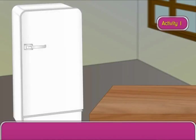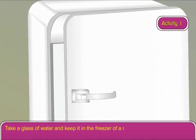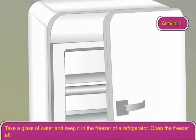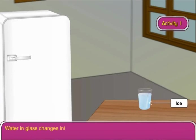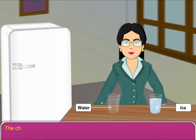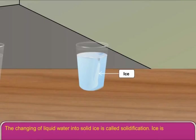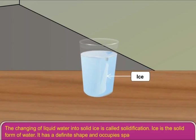Activity 1: Take a glass of water and keep it in the freezer of a refrigerator. Open the freezer after an hour. Water in the glass changes into ice. The changing of liquid water into solid ice is called solidification. Ice is the solid form of water. It has a definite shape and occupies space.